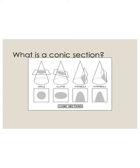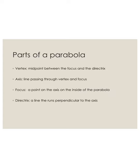Let's look at some more details involving our parabolas. We have certain things for a parabola we want to be able to identify. We have the vertex, which is your midpoint — it's the middle between the focus and the directrix. Our axis of symmetry is a line that passes through the vertex and your focus. Your focus is a point on the axis, on the inside of your parabola. And finally, your directrix is a line that runs perpendicular to your axis, behind the parabola, whereas the focus is on the inside.